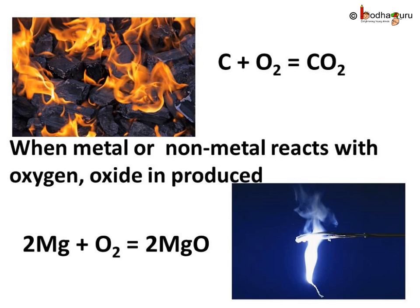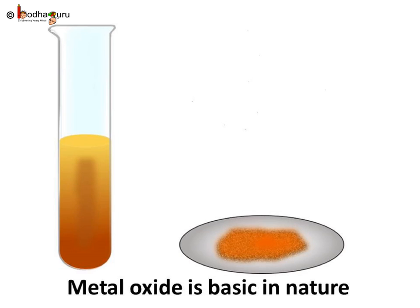Both metals and non-metals produce oxide compounds on reacting with oxygen. But the properties of metallic oxides and non-metallic oxides are different. Now let us try to figure out if the oxides of metals and non-metals are acidic or basic in nature.